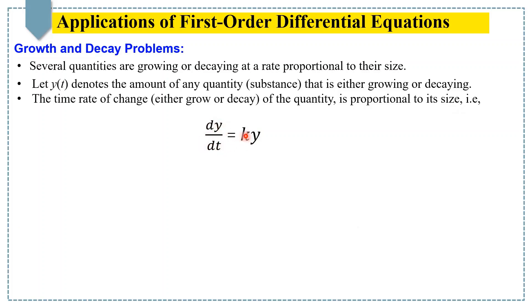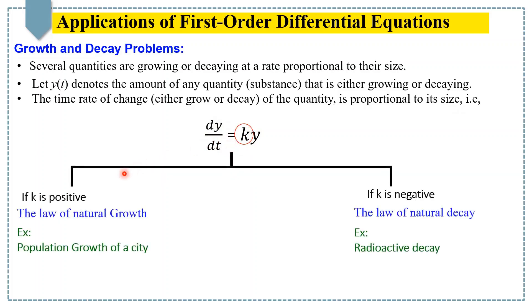This k is called a proportionality constant. Depending on its sign, the case would be either growth or decay. If k is positive, this equation is called the law of natural growth. If k is negative, this equation is called the law of natural decay.